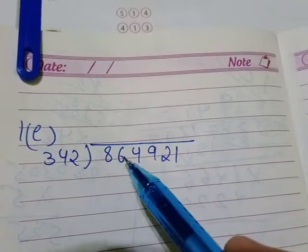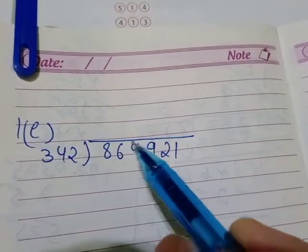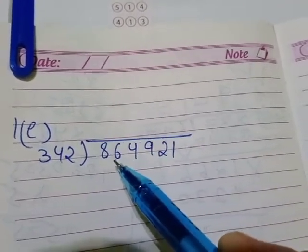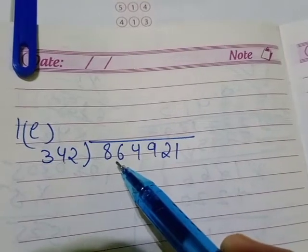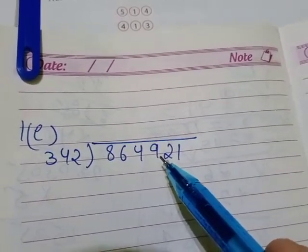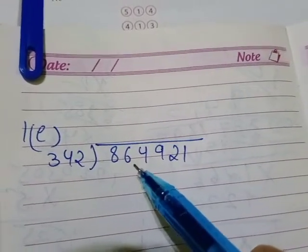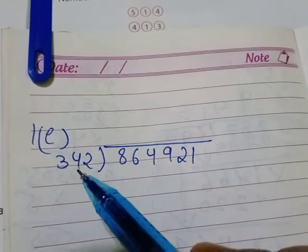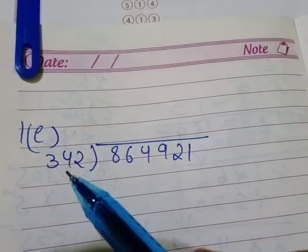Dividend is bigger, we can see. So when the dividend is bigger, no need to take the fourth digit, right? Because dividend is already more than the divisor number. So we want to see that in the table of 342 any number which is near to 864 or 864 itself.